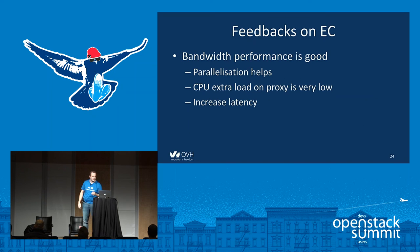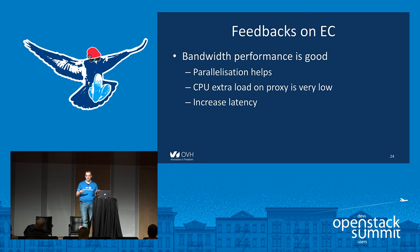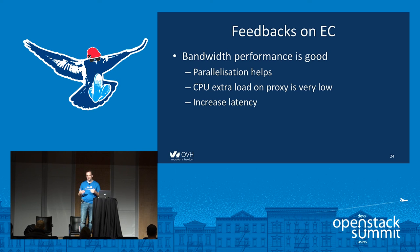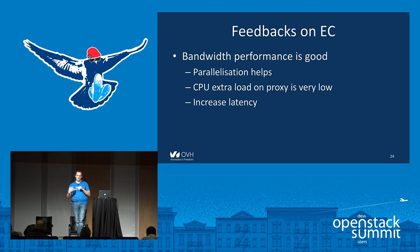This is a good time to give some feedback on erasure coding. First, regarding bandwidth — it's pretty good. You won't see a lot of difference from replica, except if you try to access the same object many times in parallel; then replica will perform better. But for normal general public use like Ubik, there's no problem. The extra CPU load on the proxy is very, very low — we didn't even notice the difference. But you do have a small increased latency to access your object, linked to the way erasure coding works: there is a buffer on the proxy that must be filled before sending data to the customer.